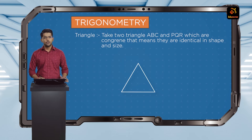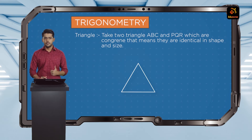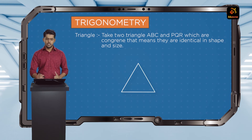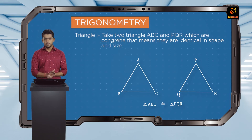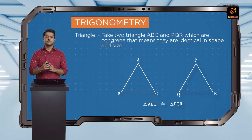For a triangle, two types of concepts really play a role. The first is congruency and the second is similarity. Whenever we talk about two triangles — let's say triangle ABC and triangle PQR are congruent — that means they are both identical in shape and size.